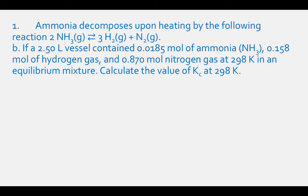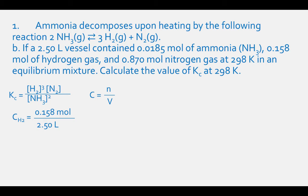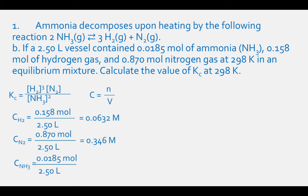To solve Part B, calculate concentrations and plug into the Kc expression: concentration of H2 cubed times concentration of N2 divided by concentration of NH3 squared. Concentration of H2 equals 0.158 mol / 2.50 L equals 0.0632 M. Concentration of N2 equals 0.870 / 2.50 equals 0.346 M. Concentration of NH3 equals 0.0185 / 2.50 equals 0.00740 M. Therefore Kc equals 0.0632 cubed times 0.346 divided by 0.00740 squared, which equals 1.60.